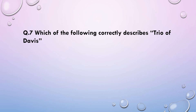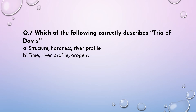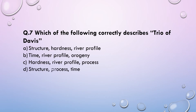Next question — very important: Which of the following correctly describes the triad of Davis? (a) Structure, hardness, river profile; (b) Time, river profile, origin; (c) Hardness, river profile, process; or (d) Structure, process, time. The answer is option D — structure, process, and time. This is the triad of Davis for the Davisian cycle of erosion concept.